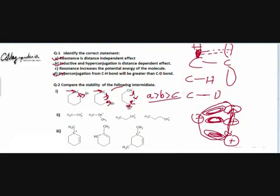Moving on to the second part of question 2, we have to think about the most important factor. The most important factor is resonance, but resonance is not going to operate in this problem because there is no pi bond and there is no pi bond in conjugation with the plus charge. So resonance is not going to happen. We have to come down to the next prominent effect, that is hyperconjugation.